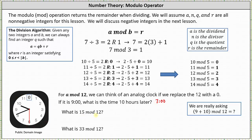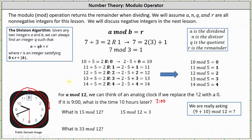What is 15 mod 12? Using the clock, we would start at zero and move ahead 15 hours. Once around the clock would be 12 hours, and then three hours more brings us to three. 15 mod 12 is equal to three because three is the remainder when 15 is divided by 12. And what is 33 mod 12? This is equal to the remainder when 33 is divided by 12. There are two 12s in 33: two times 12 is 24, and 24 plus nine is equal to 33. So 33 mod 12 is equal to nine.